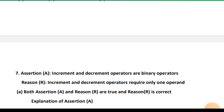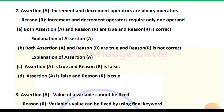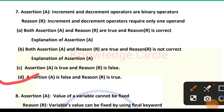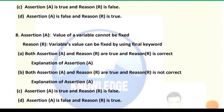Question 7 — Assertion: Increment and decrement operators are binary operators. Reason: Increment and decrement operators require only one operand. Increment and decrement operators are not binary operators — they are unary operators because they require only one operand. So the assertion is false and the reason is true, making option D correct.